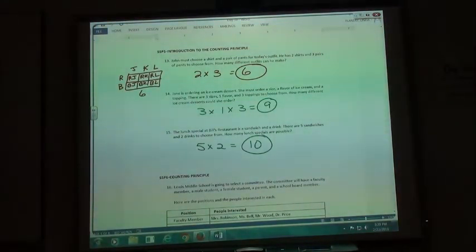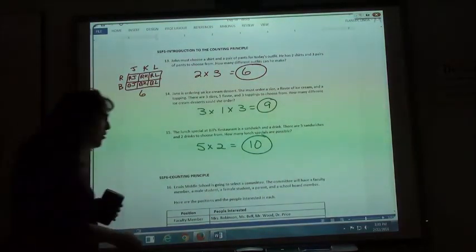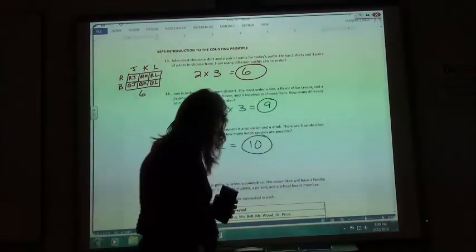So, counting principle: I take the number of ways from each choice, I multiply it together, and that tells me the total number of ways I could do it.